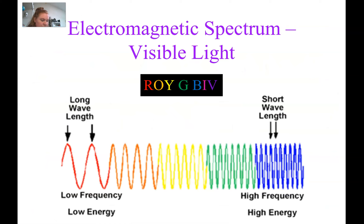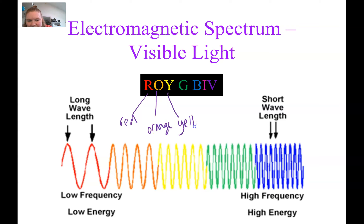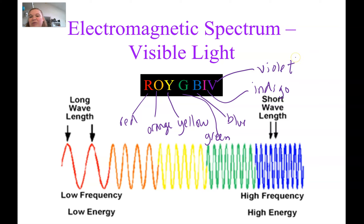Here's a visual of visible light. One way to remember the colors is ROYGBIV — red, orange, yellow, green, blue, indigo, and violet. You've probably heard this before, perhaps from Bill Nye the Science Guy. This graphic also shows the difference in wavelength and includes frequency and energy as we move through the colors, illustrating that change as we go from the red side to the violet side.